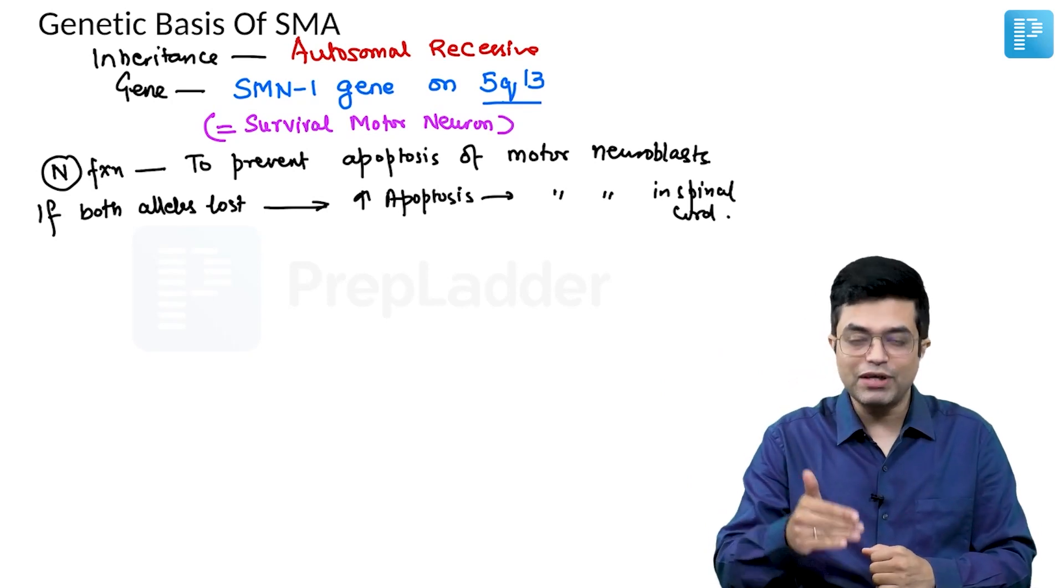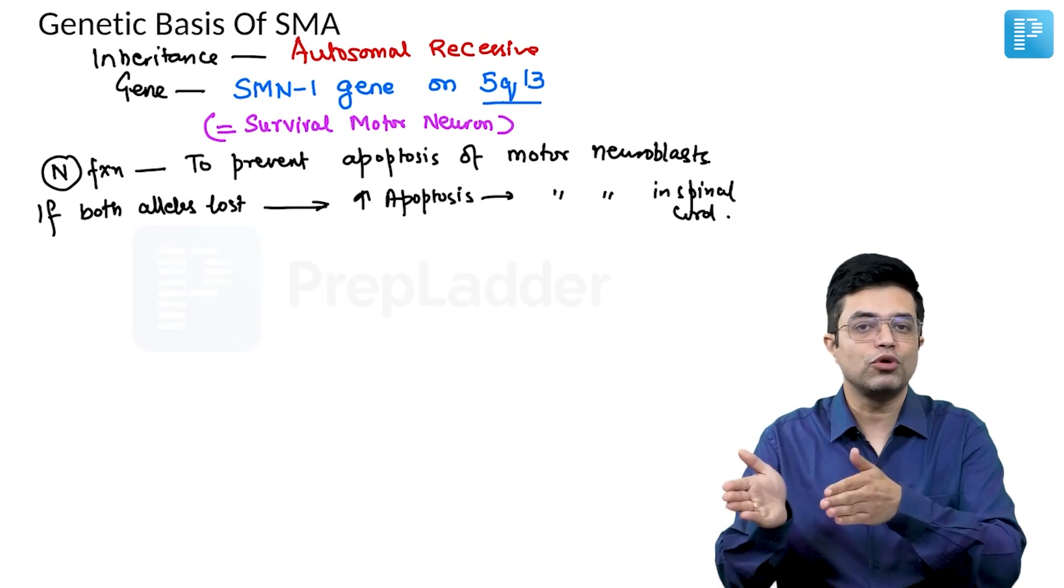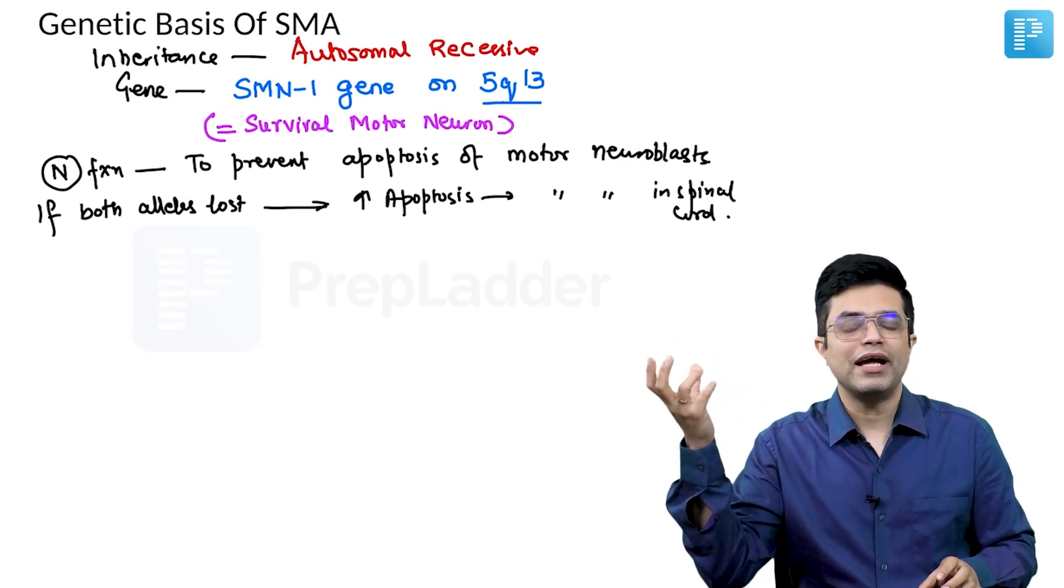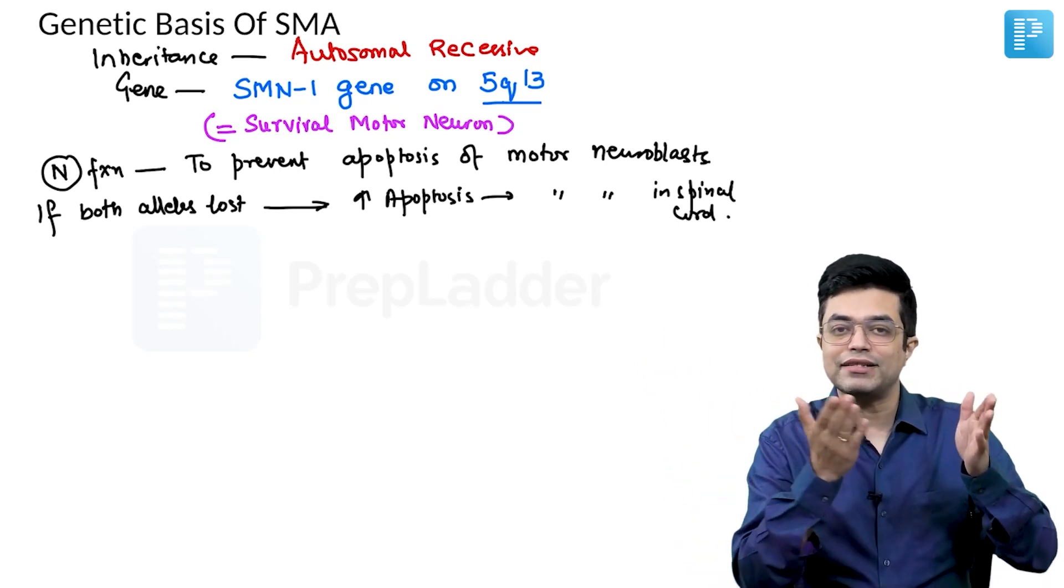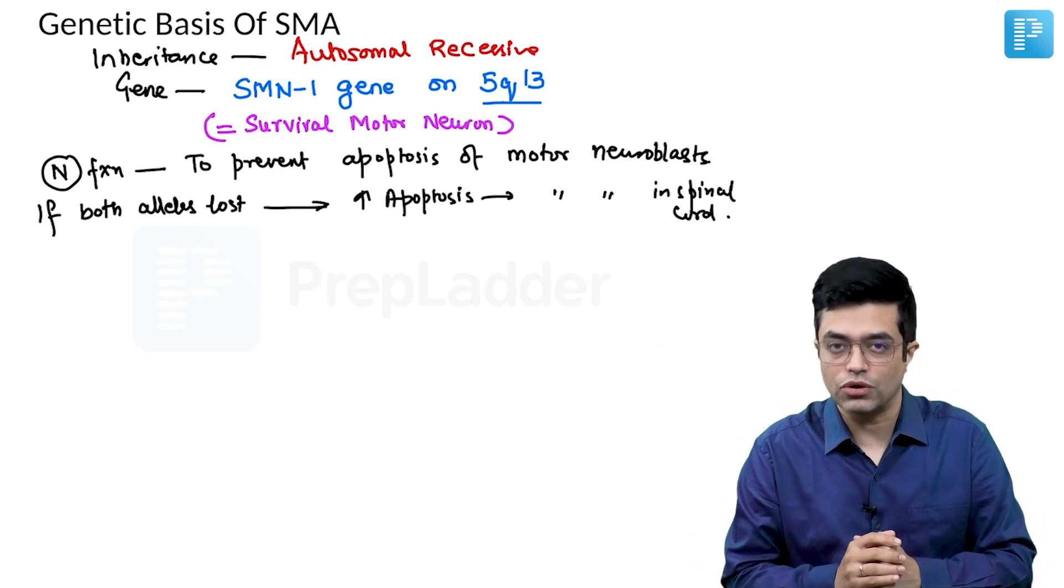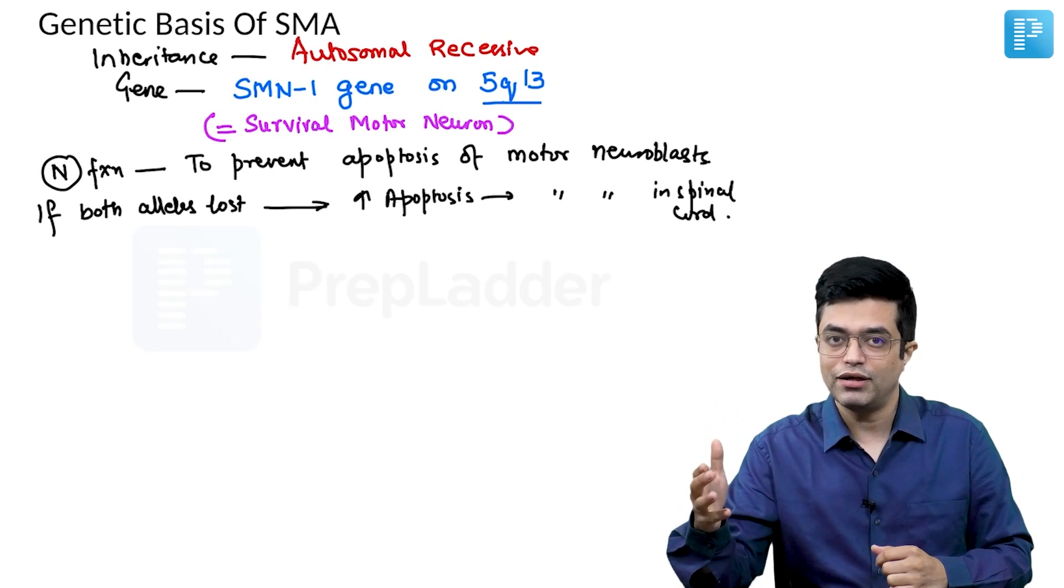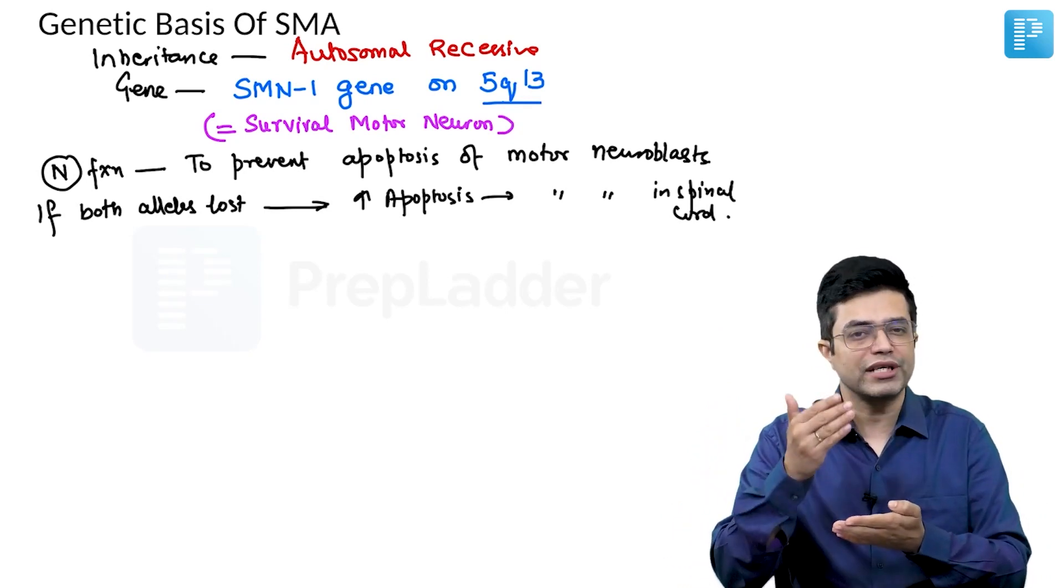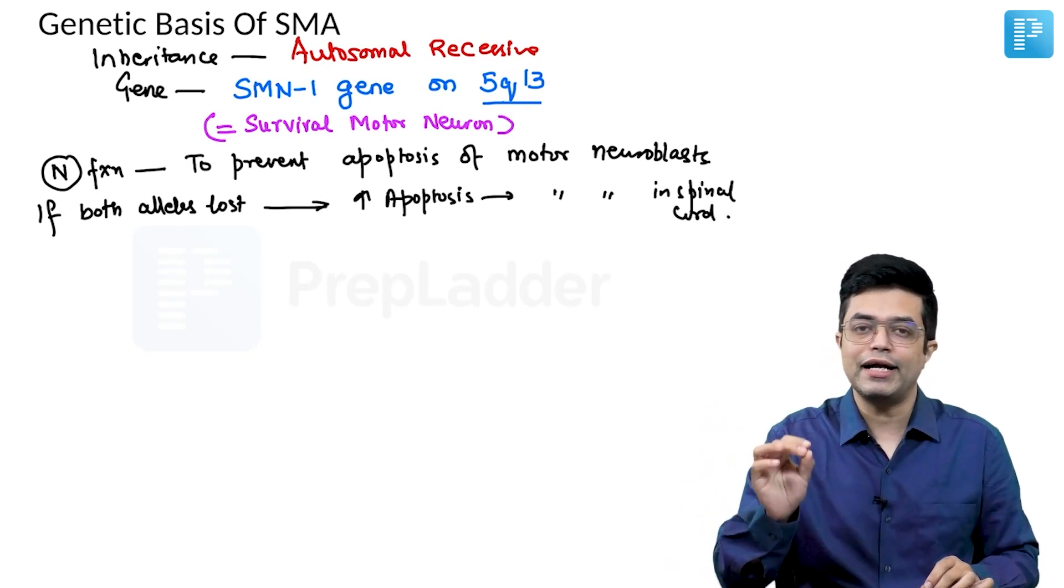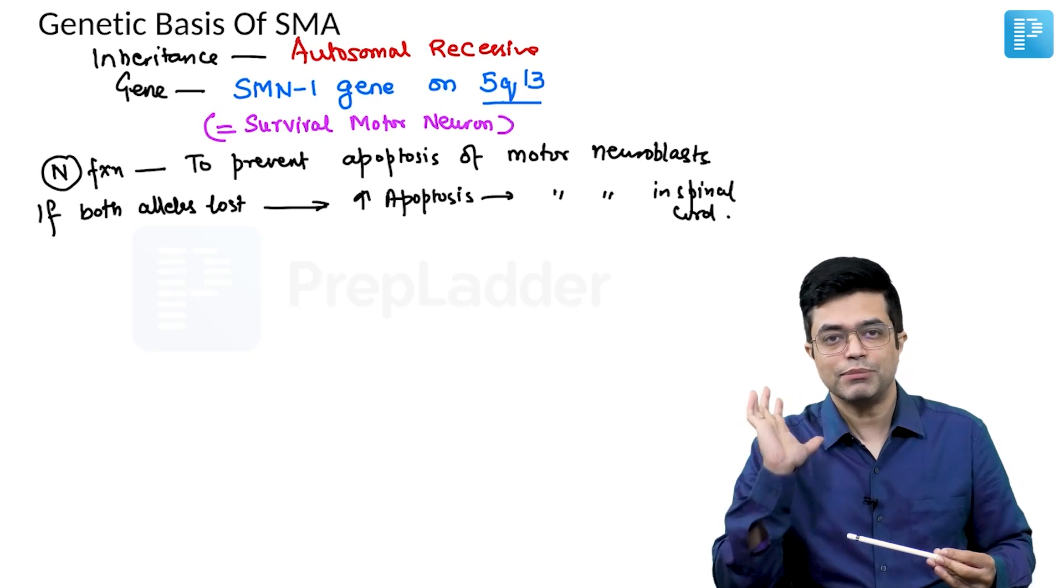When SMN1 gene is lost, the proteins formed by SMN1 gene will not be there to protect those neurons, so the apoptosis process which starts from excess primitive neuroblasts gets extended to the actual cells of the anterior horn cell of spinal cord. This process of apoptosis continues postnatally in life as well, which leads to progressive loss, progressive death, progressive degeneration of spinal motor neurons and the disease manifests.